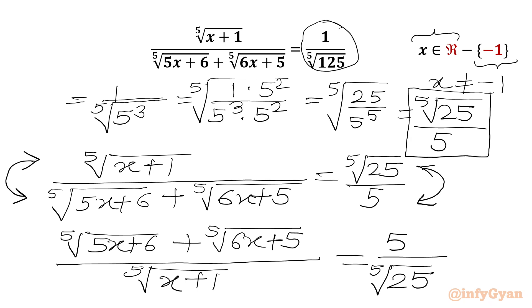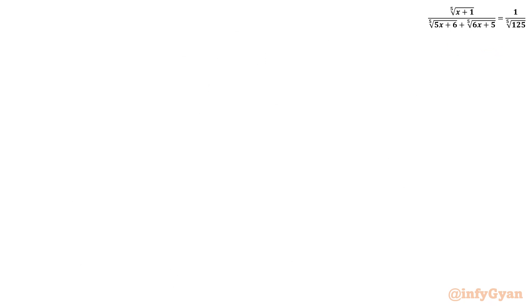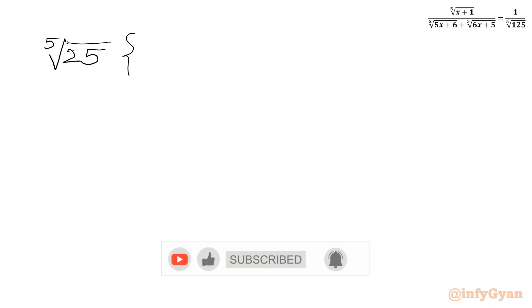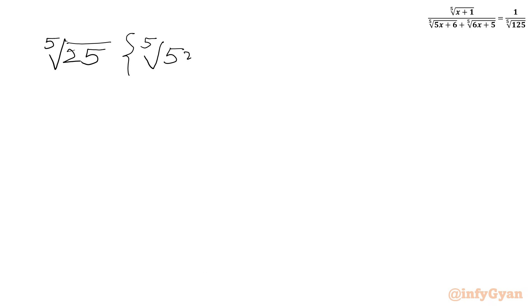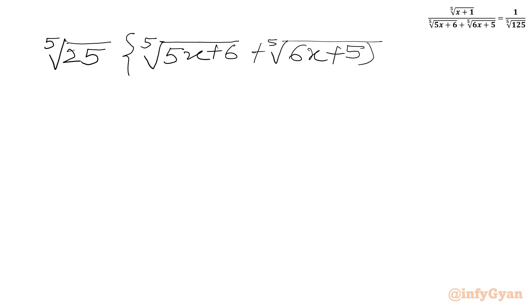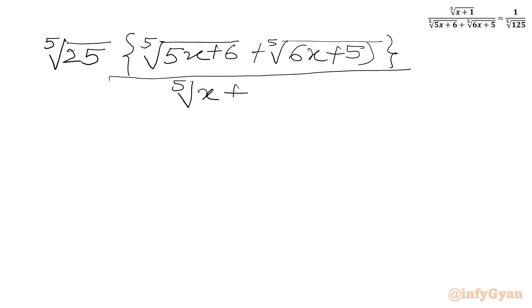Now we will multiply both sides by the 5th root of 25. So we will get the 5th root of 25 times the numerator — which is the 5th root of (5x+6) plus the 5th root of (6x+5) — over the 5th root of (x+1). The RHS will be 5.